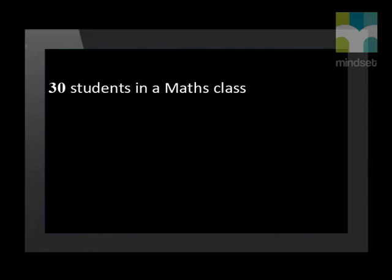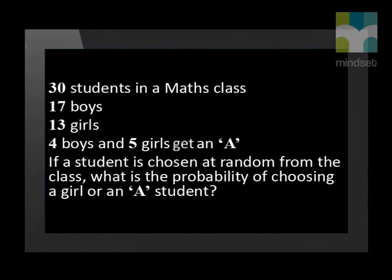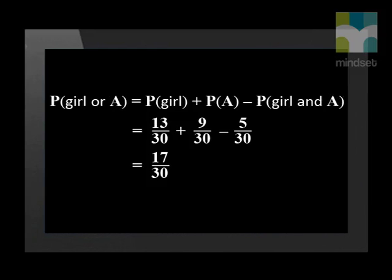Let's apply this in an example. In a math class of 30 students, 17 are boys and 13 are girls. On a unit test, four boys and five girls made an A grade. If a student is chosen at random, what is the probability of choosing a girl or an A student? Since picking an A student who is also a girl is possible, the two events are not mutually exclusive. Using the addition formula: the probability of choosing a girl is 13 over 30, plus the probability of choosing an A candidate which is 9 over 30, minus the probability of choosing an A candidate who is also a girl which is 5 over 30. This simplifies to 17 over 30.